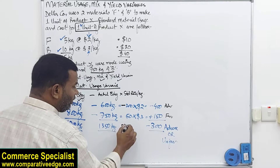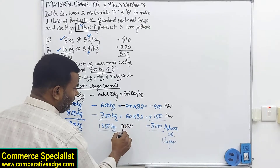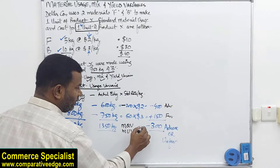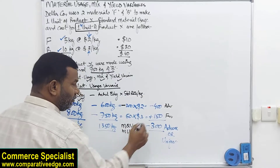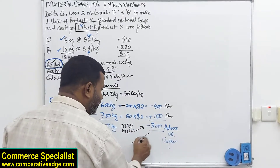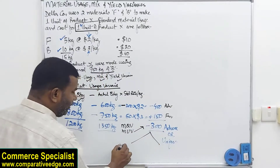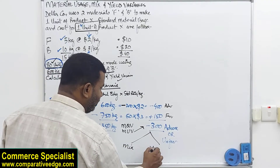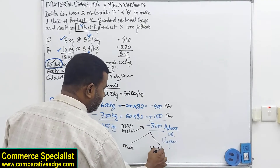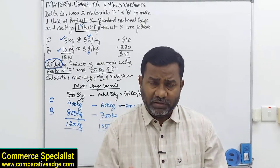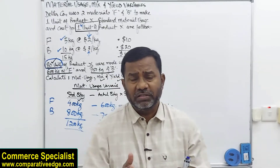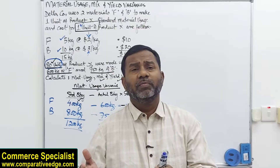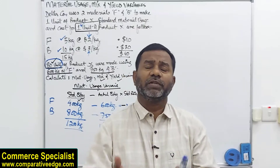This $300 adverse is your material usage variance, also called material quantity variance. This usage variance is further explained by two sub-variances: material mix variance and material yield variance. Mix variance arises when materials are not used in the proportion they were supposed to be used in.